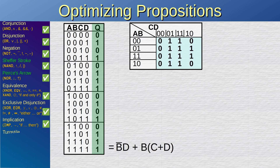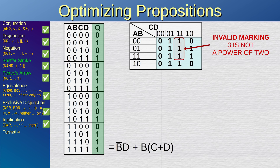Now we begin identifying where the ones lie in the map. We do that by marking them using rectangular markings, where both the width and the height are powers of two. That is, one is fine, two is fine, four is fine, but three is not fine.